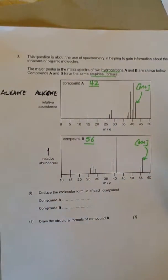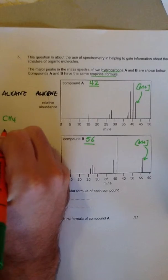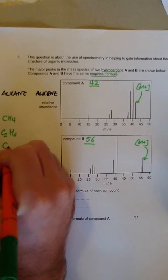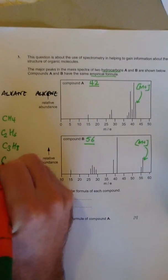So if it were an alkane, it could be methane CH4, it could be ethane C2H6, it could be propane C3H8, or it could be butane C4H10.